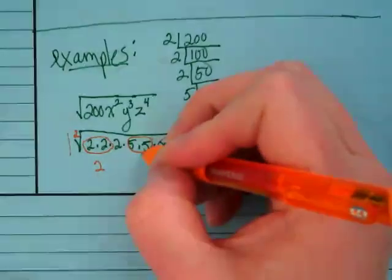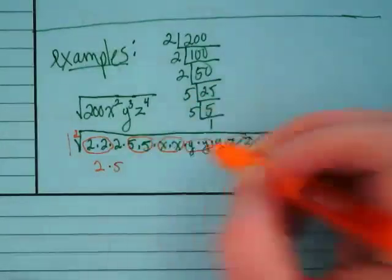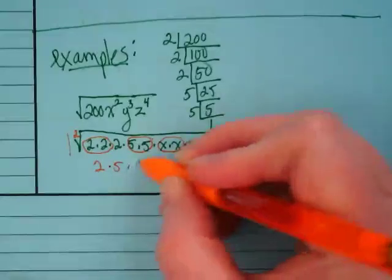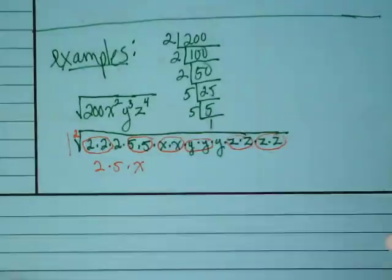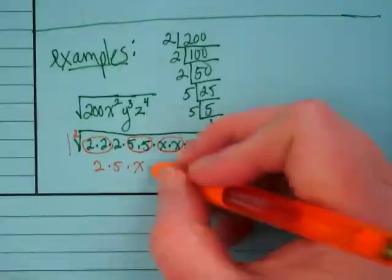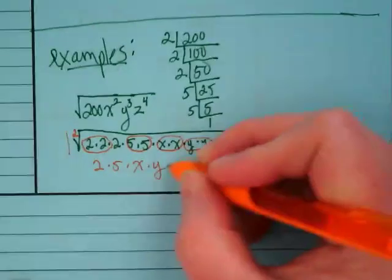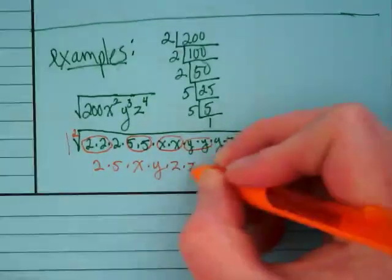For the pair of fives, I'm pulling out a factor of five. I've got two x's, so that's going to be one x when I pull it out of the radical, times one y, times two z's.